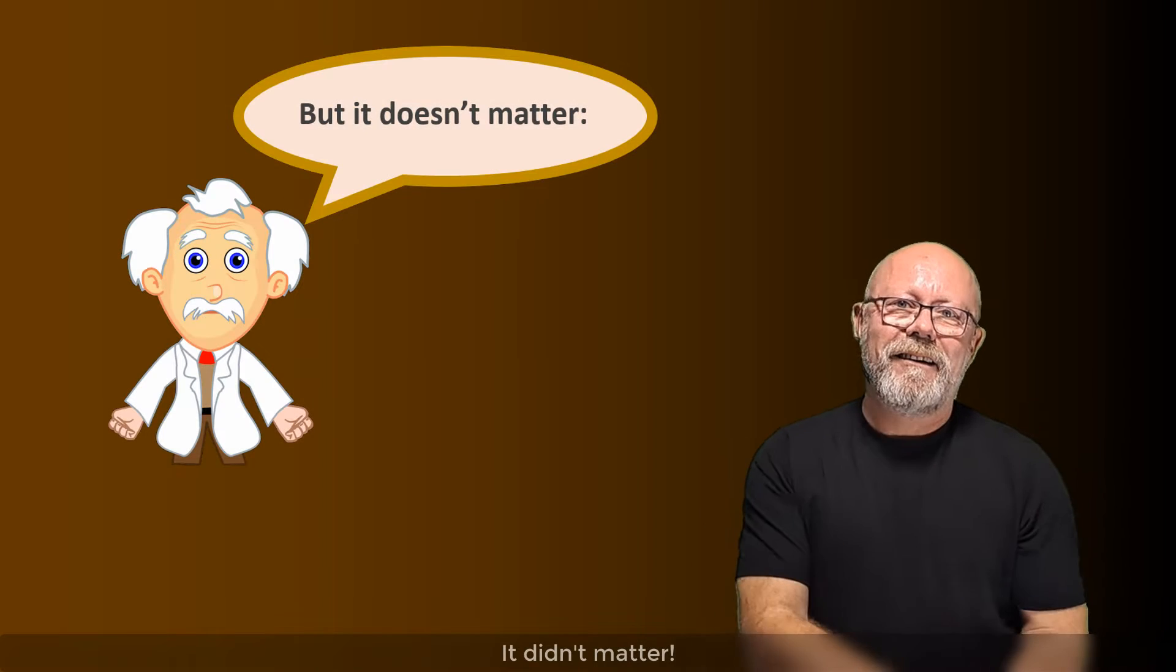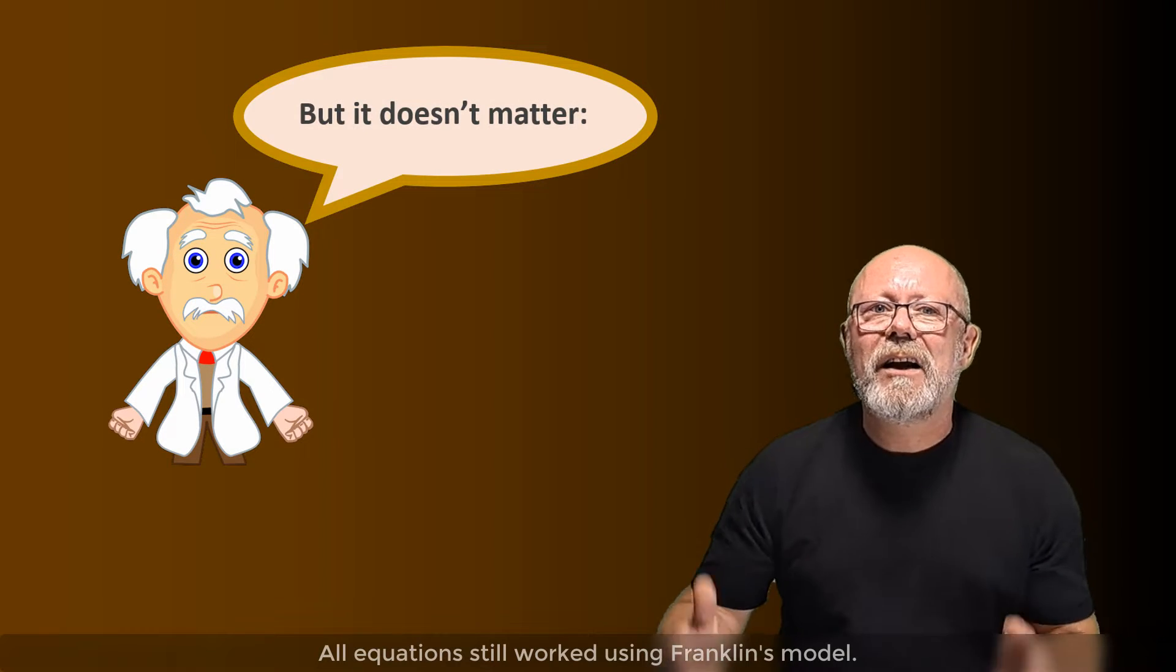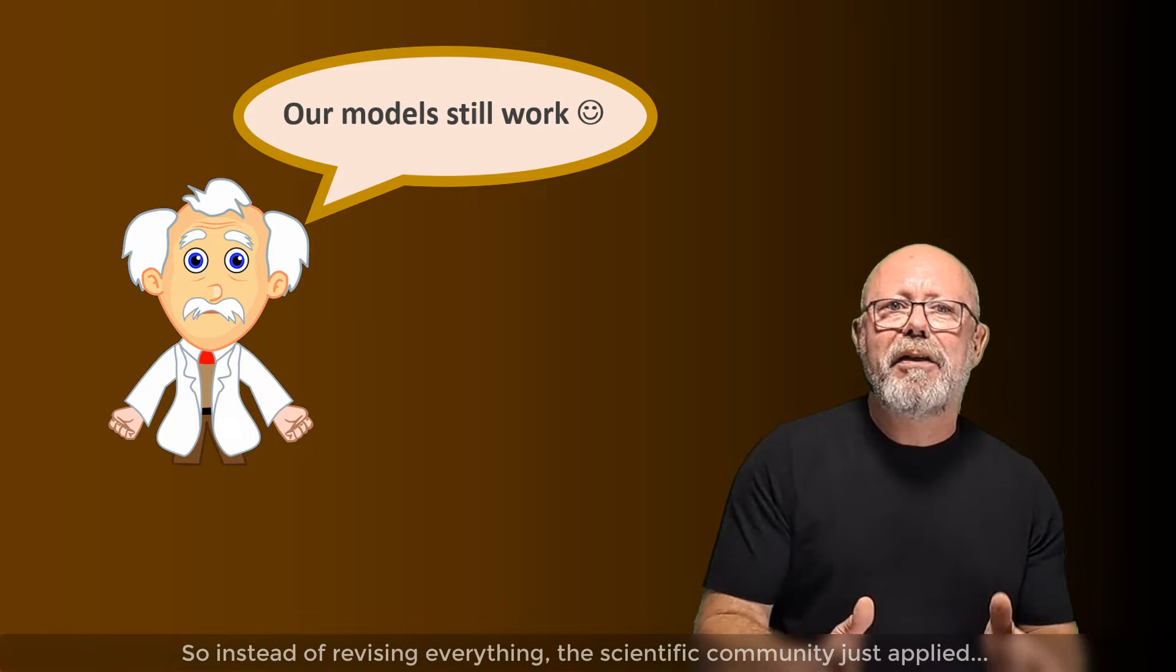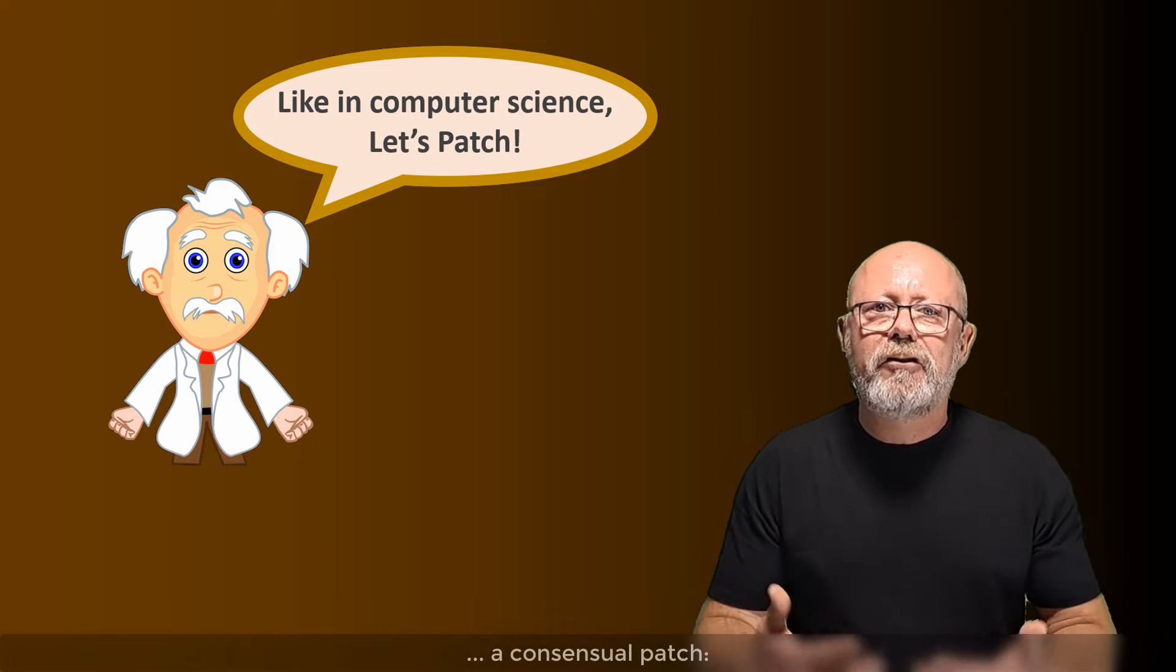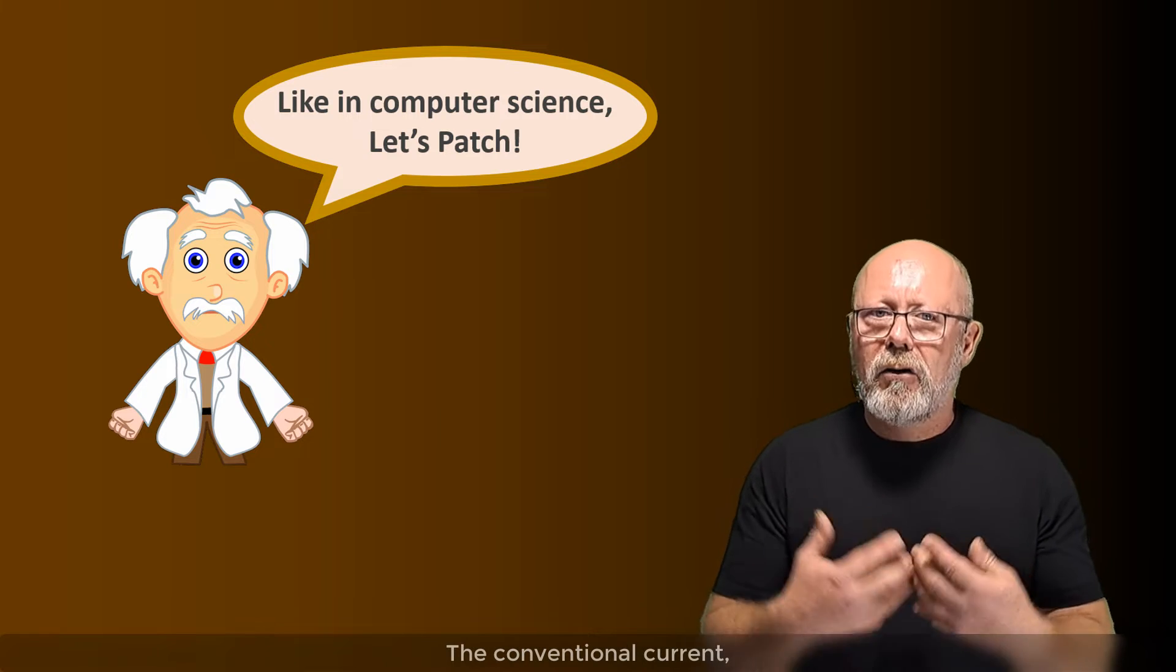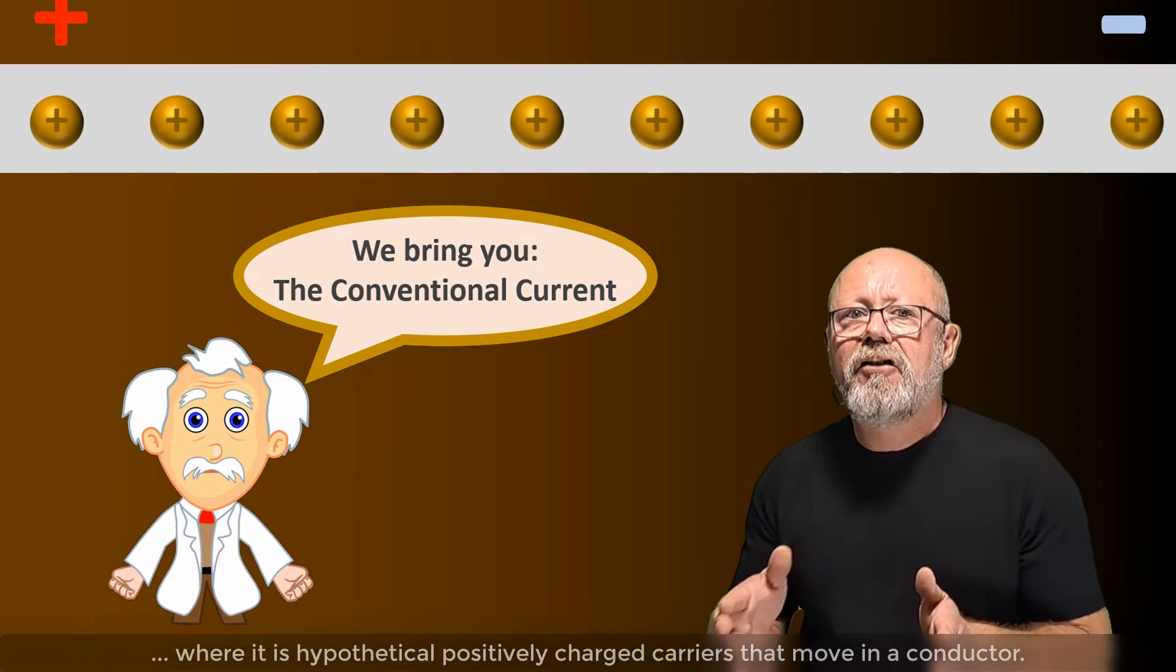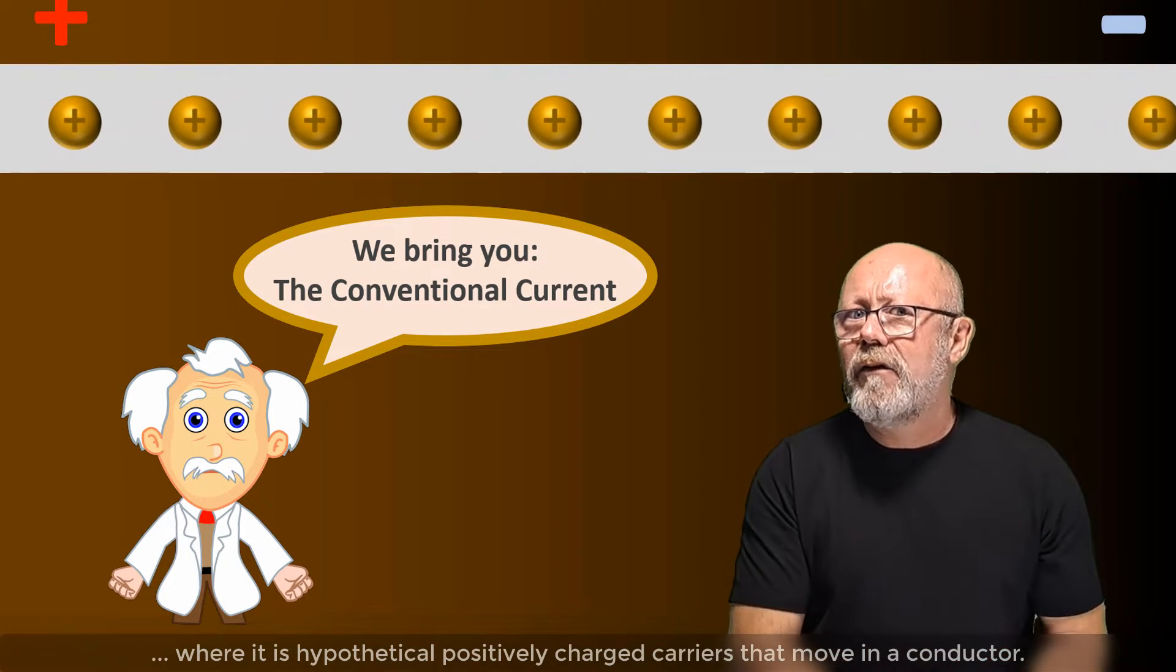But there was a way out. It didn't matter. All equations still work using Franklin's model. So, instead of revising everything, the scientific community just applied a consensual patch, the conventional current, where it is hypothetical positively charged carriers that move in a conductor.